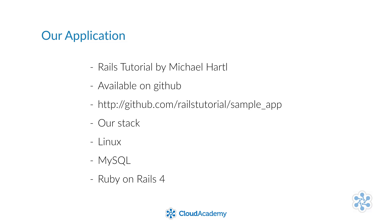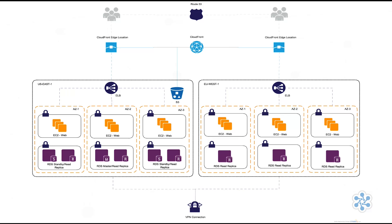Our application will be the sample from a great book called Rails Tutorial by Michael Hartl. It is a simple Twitter-like application built in Ruby on Rails 4. Without tweaking the application, we will leverage the built-in power of AWS to create a highly available system.